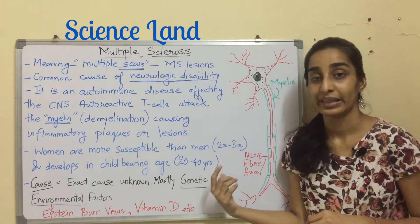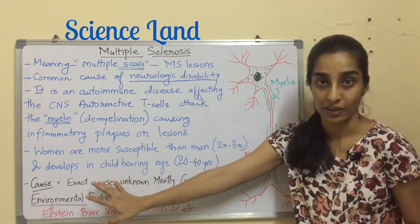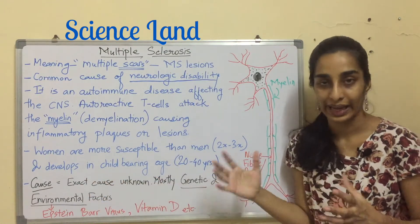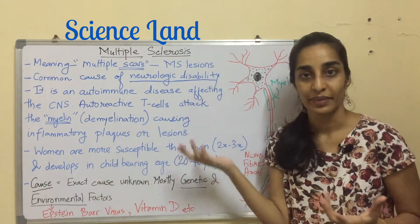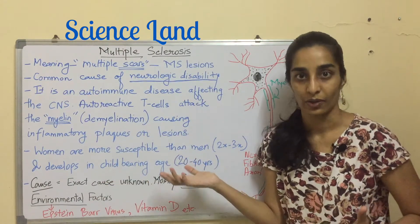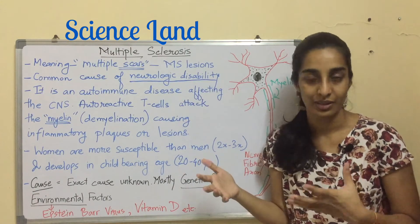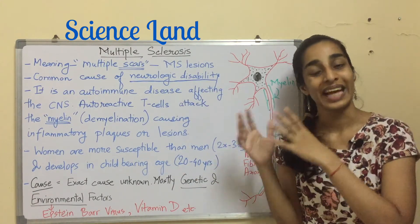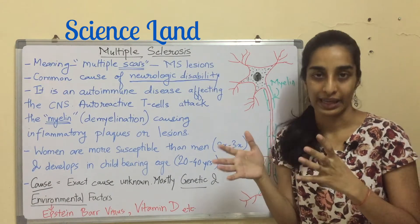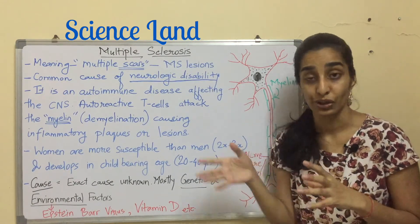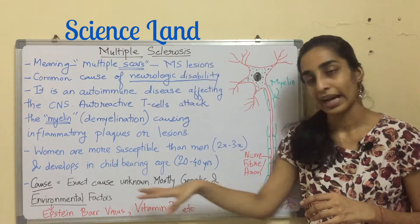Women are more susceptible than men — two to three times more. Women usually develop multiple sclerosis in the childbearing age, which is 20 to 40 years. We don't know the exact cause; multiple sclerosis is not well understood.